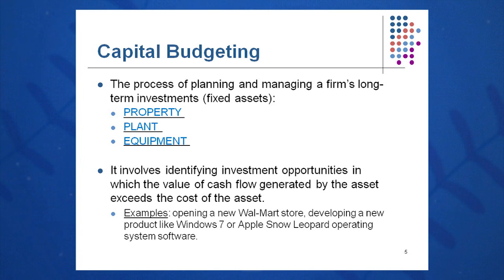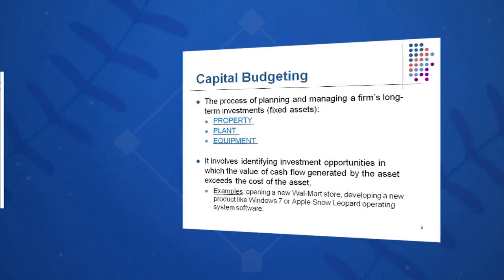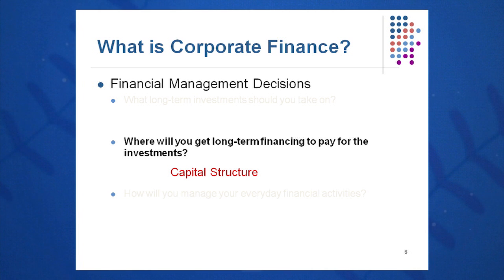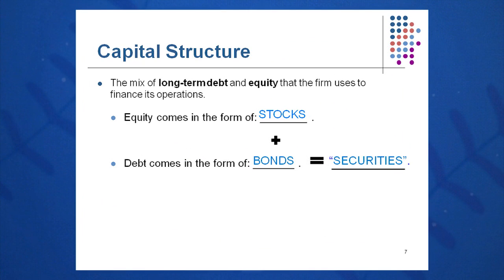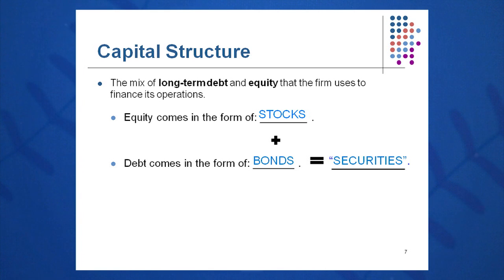With a software company like Microsoft or Apple, capital budgeting might involve whether to develop a new operating system like Windows 7 or Snow Leopard. Question number two: where will we get the financing to build these new buildings, property, plant, and equipment if we decide to go ahead? This question is called the capital structure question. Capital structure is the mix of long-term debt and equity in the firm. When we talk about equity, we're talking about stocks; debt comes in the form of bonds and sometimes mortgages. When we talk about stocks and bonds, we're talking about securities.